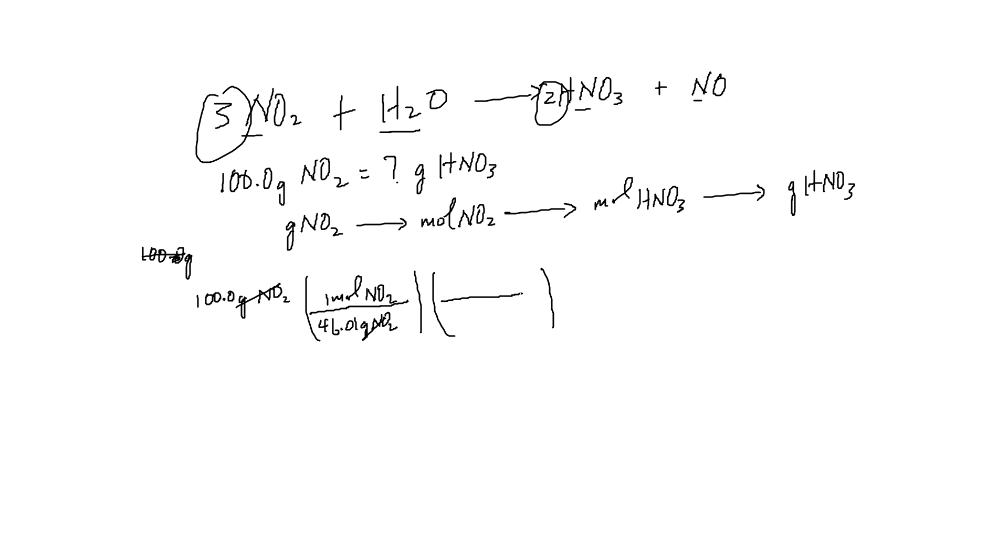And then the next step, as we said here, going from here to here, is where we're going to convert from moles of NO2 to moles of HNO3, which would be provided by these numbers here. So the way we set this up in this conversion factor is that we're going to have two moles of HNO3 and three moles of NO2. So that this goes with that.